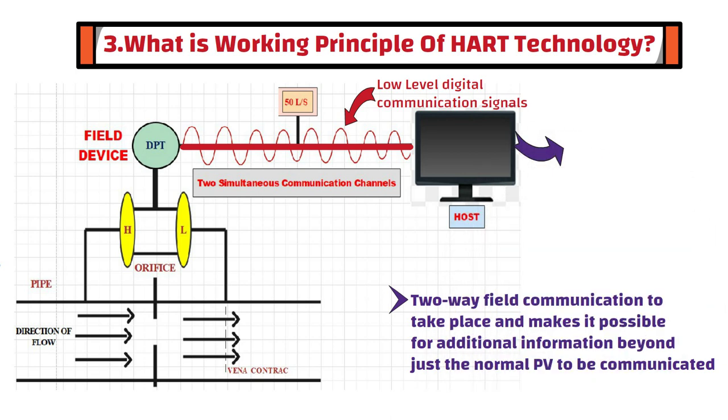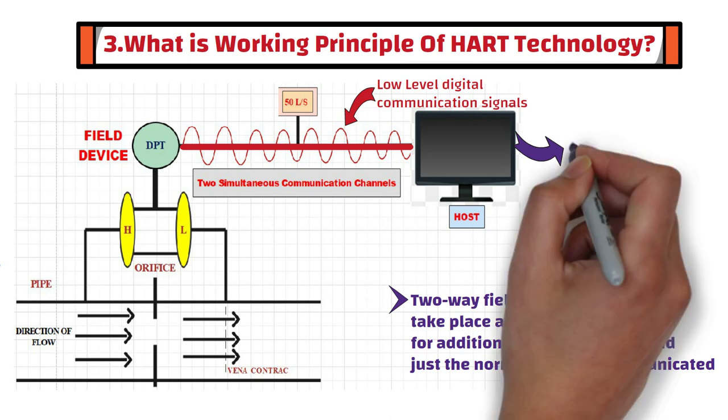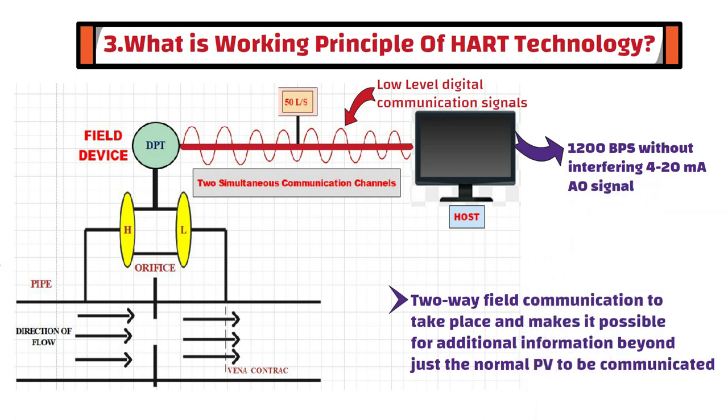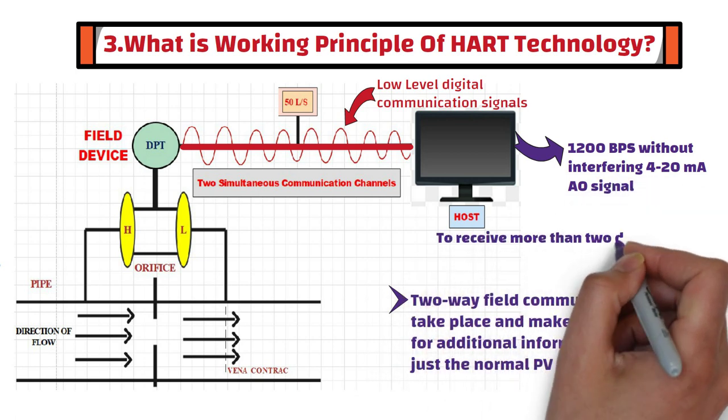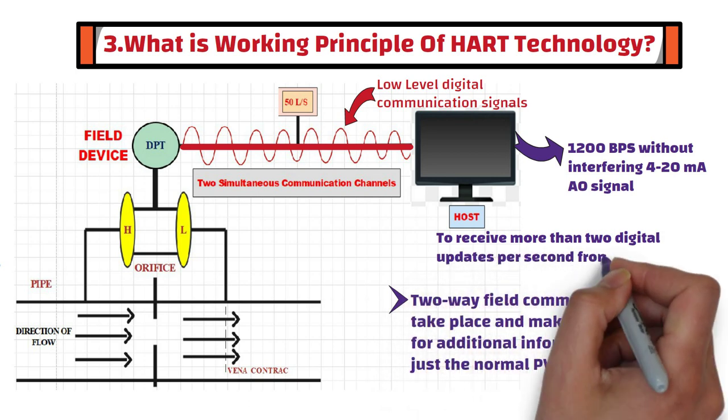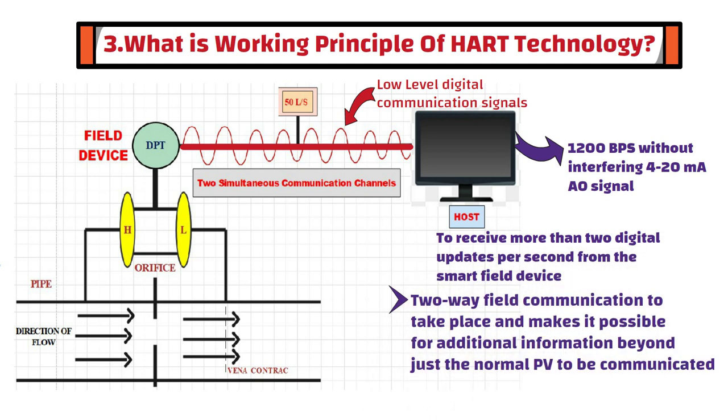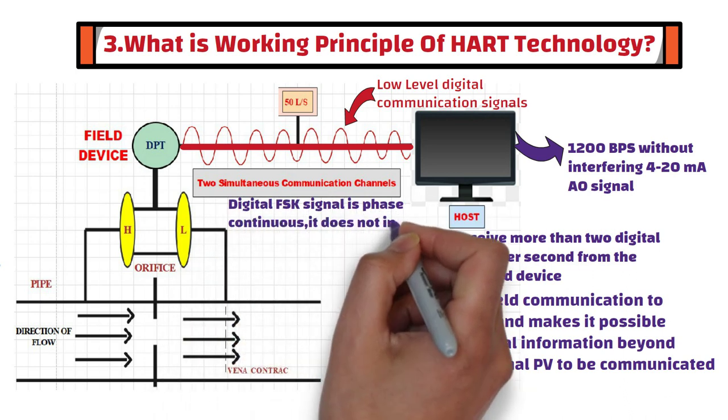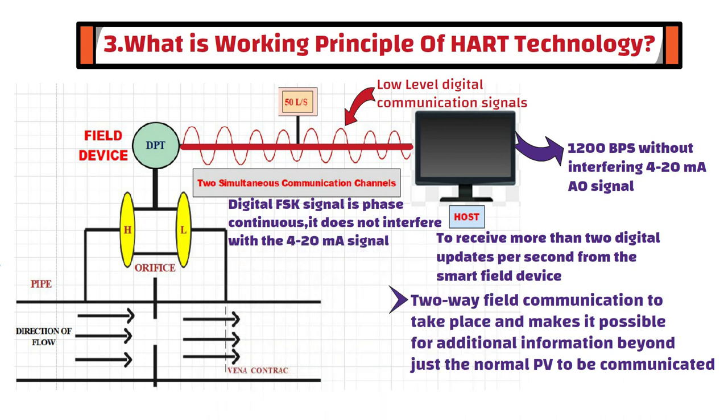In addition to this, the HART protocol communicates at 1,200 bit per second without interfering with 4-20 mA analog signal. This allows the host application to receive more than two digital updates per second from the smart field device. Since the digital frequency shift keying signal is phase continuous, it does not interfere with the 4-20 mA signal.